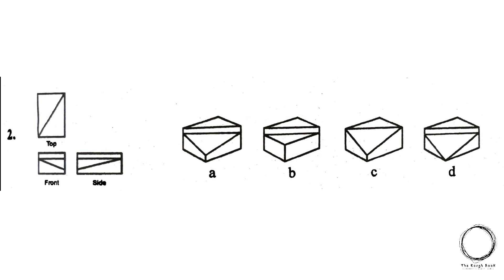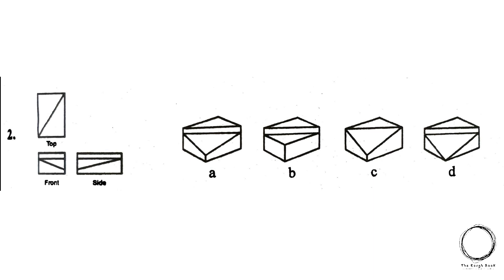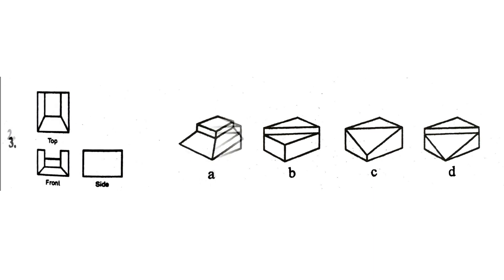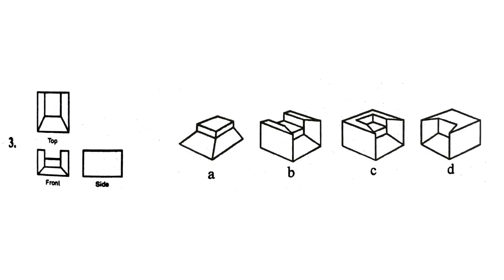Next, again starting with the top view — in this case all four options have the same kind of top view, so further checking the front and the side view. As you can see, only option A and C have a gap in the front view. Further checking the side view, only option A has the gap, hence option A is the right answer.